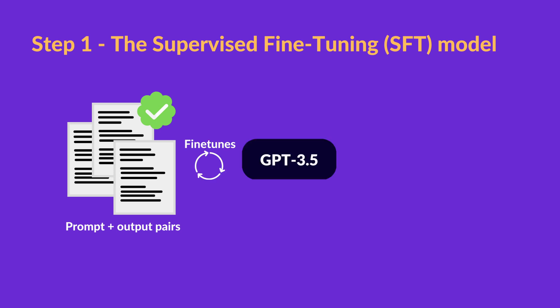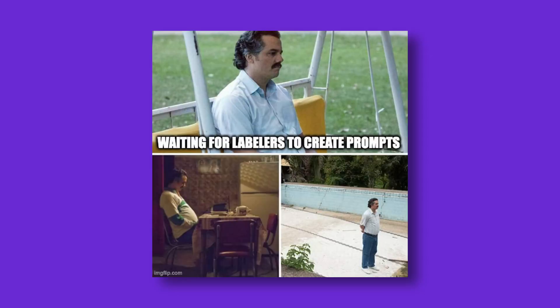Using this dataset, the developers of ChatGPT fine-tuned a pre-trained model from the GPT-3.5 series. Even though trained on high-quality data, the outputs of the SFT model at this stage probably also suffered from misalignment. To overcome this problem, instead of asking the human labelers to come up with a bigger dataset — because that would be very slow and time-consuming — the developers came up with the second step: making the reward model.